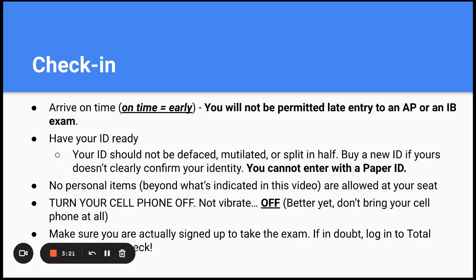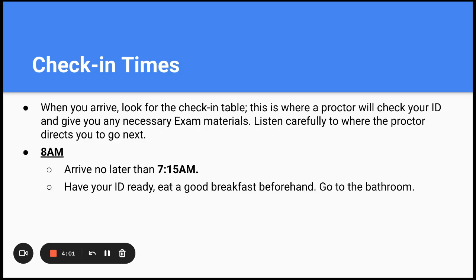When checking into your exam, you must arrive early. You will not be permitted late entry to an AP or IB exam. Please have your ID ready. Your ID should not be defaced, mutilated, or split in half — buy a new ID if yours doesn't clearly confirm your identity. You cannot enter with a paper ID. No personal items beyond what is indicated in this video are allowed at your seat. Turn your cell phone off — not vibrate, off. Better yet, don't bring your cell phone at all. Make sure you have actually signed up to take the exam; if in doubt, reach out to me or log into Total Registration to double check. When you arrive, look for the check-in table where a proctor will check your ID and give you any necessary exam materials. Arrive at 7:15 a.m., have your ID ready, eat a good breakfast beforehand, and go to the bathroom.